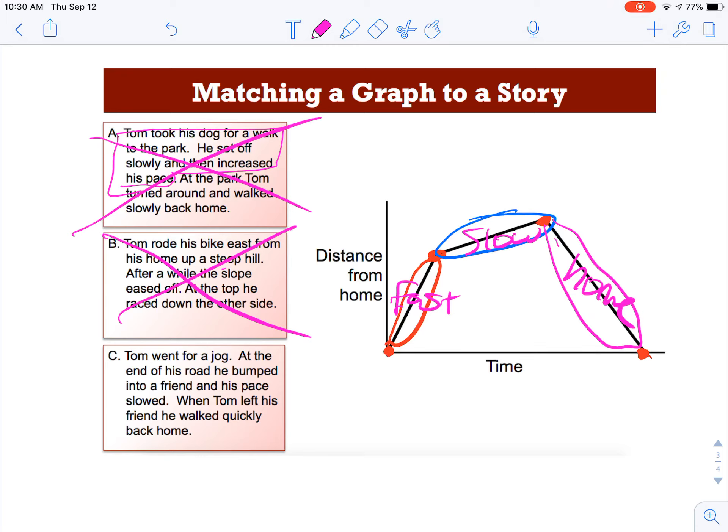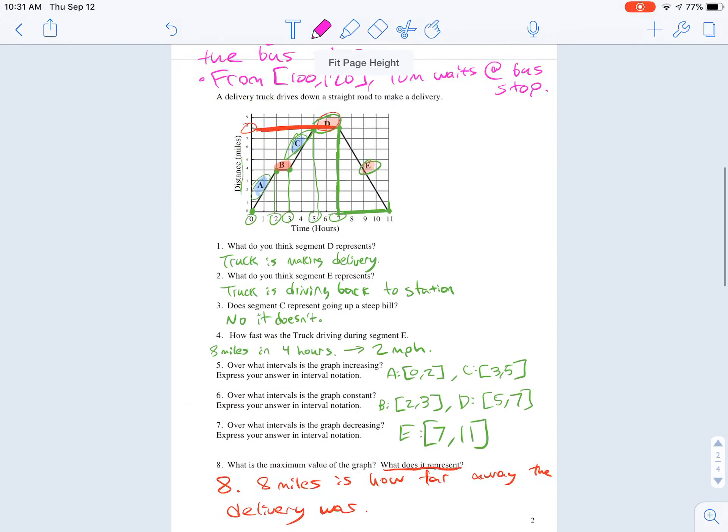So let's check the last one. Tom went for a jog. At the end of the road, he bumped into a friend, and his pace slowed. So he started fast, then he slowed down, and then after he left his friend, he went back home. That's exactly what this is showing. He went fast, then he went slow, and then he went home. So C would be our correct answer. And that's it for this lesson.